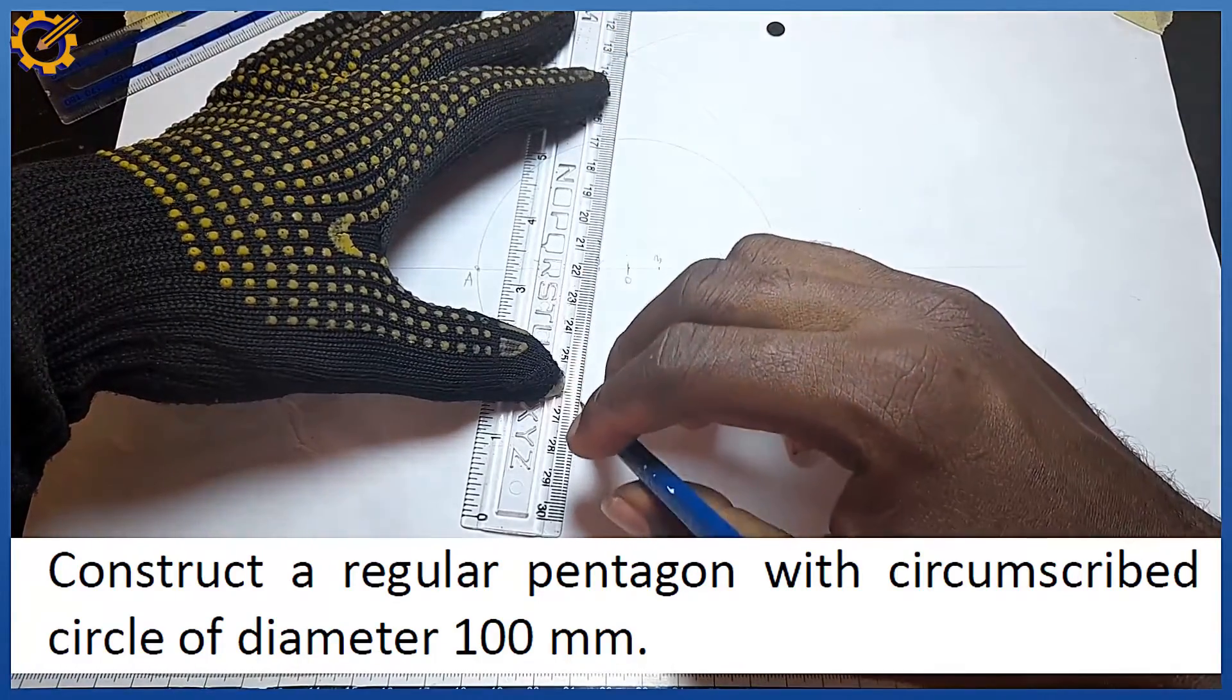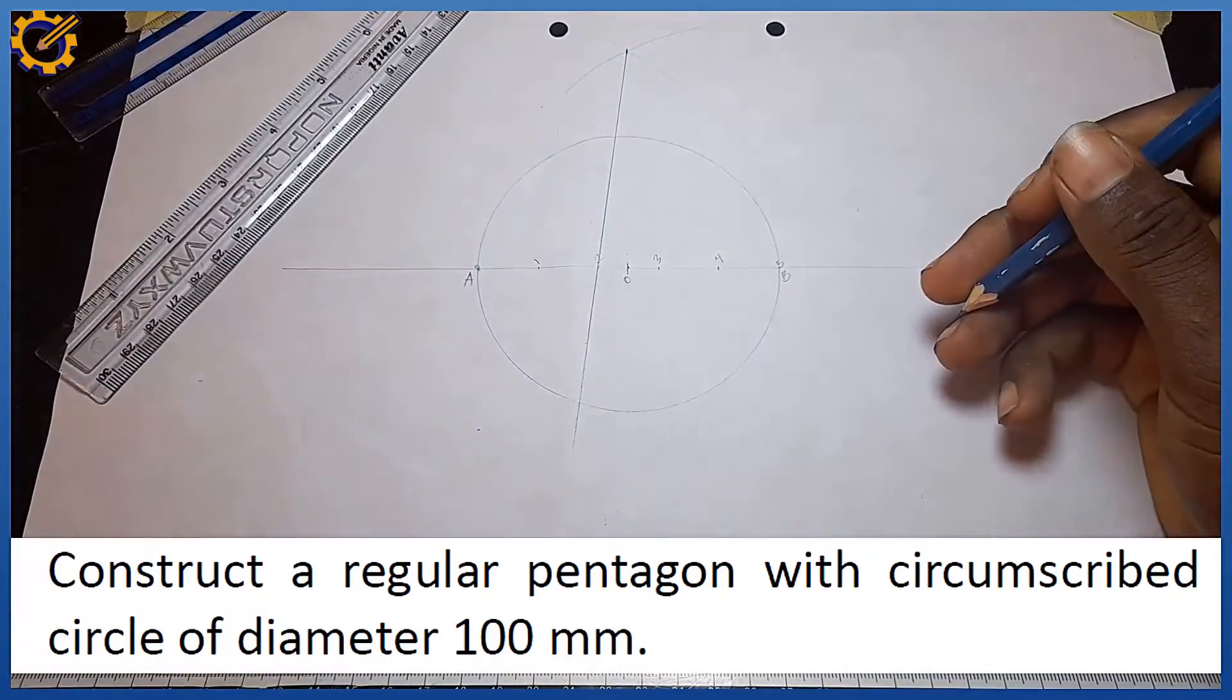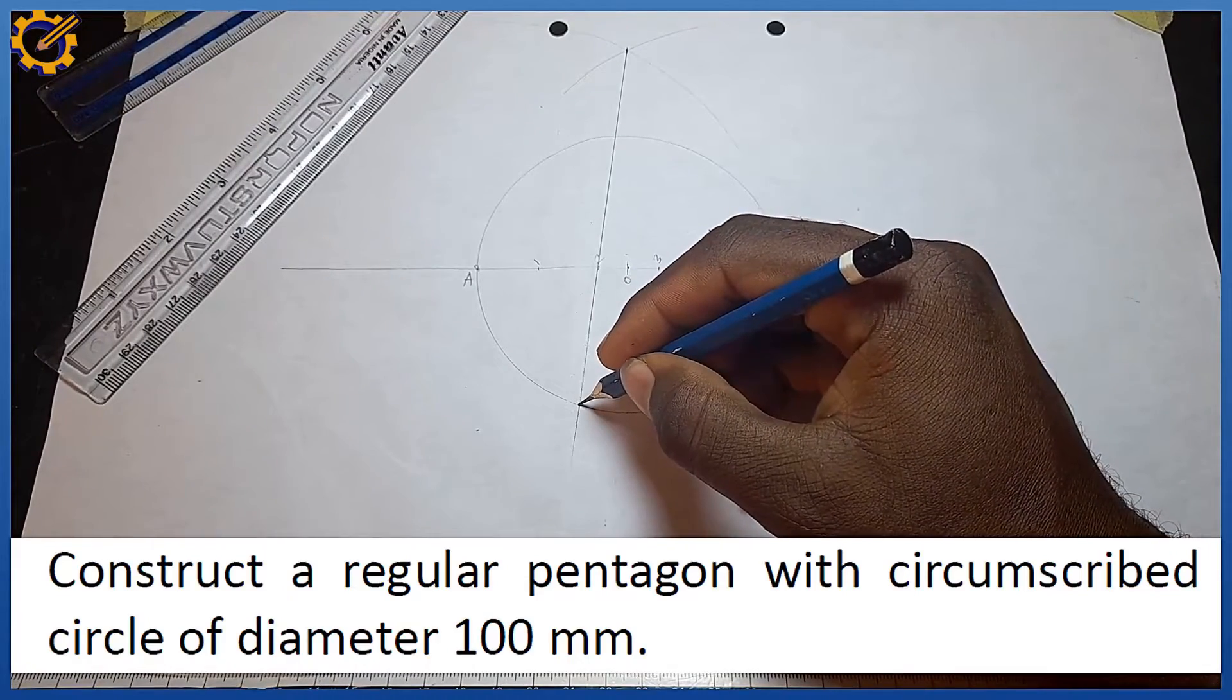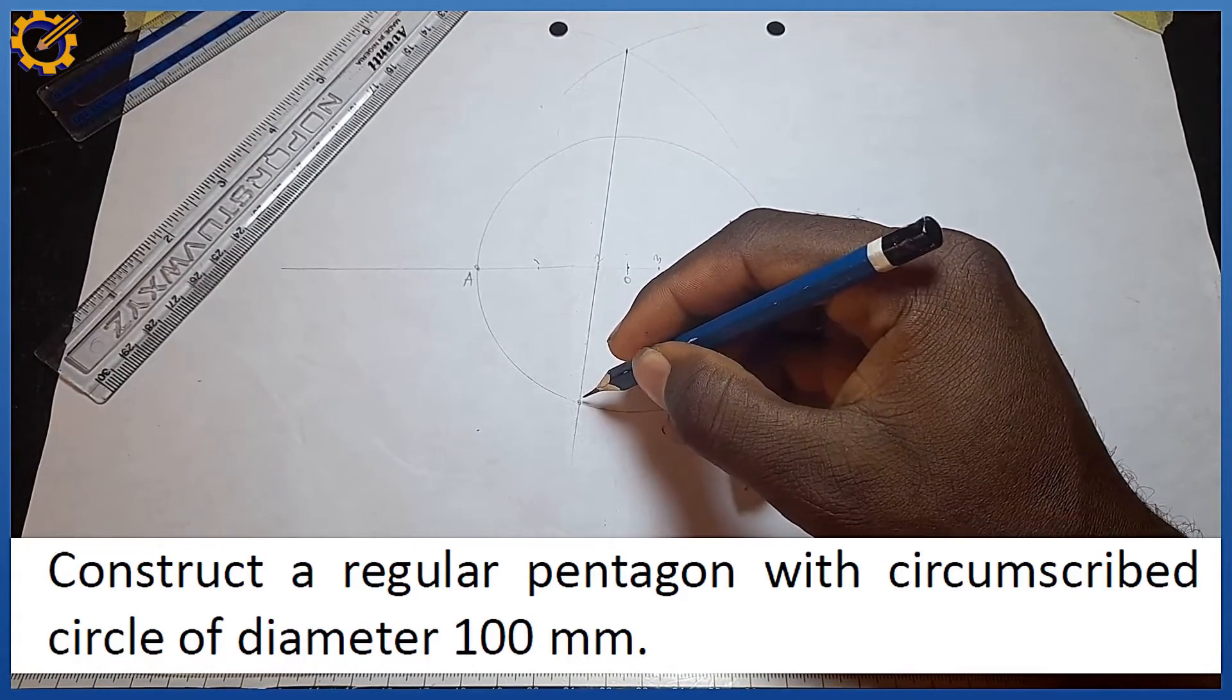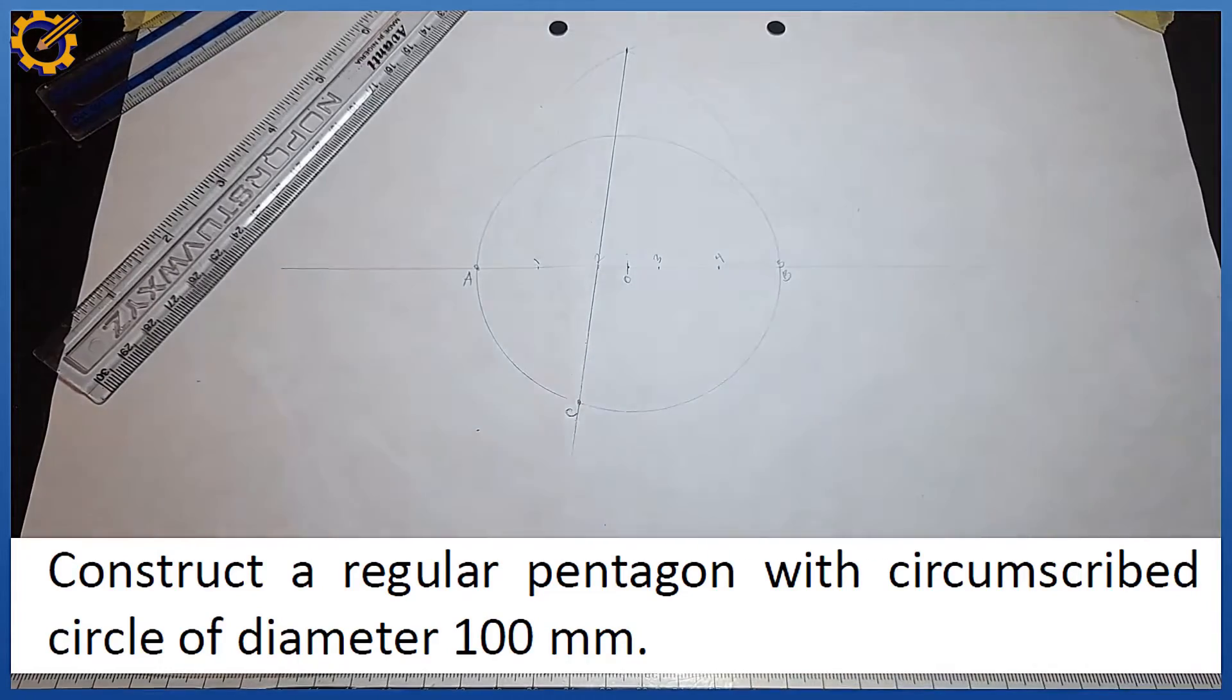That is the line through mark 2. Drawing through mark 2, it touches my circle at this spot right here. I can call this spot C. The next procedure is to pick my compass and pick distance A to C.